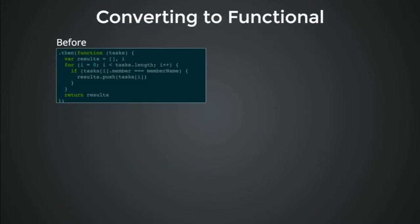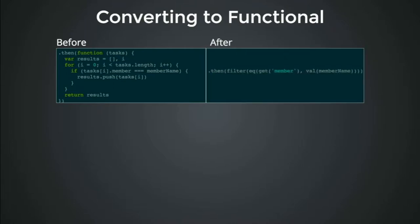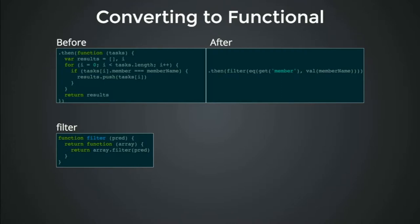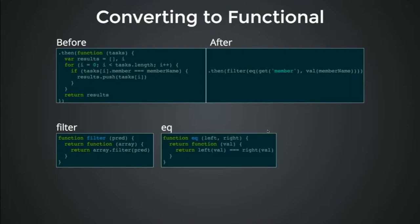The next chunk: we want to filter by member name — make sure it equals the value passed into our function. Before versus after: we go filter where equals, equaling two things — getting the member equal to the actual value of member name. A lot less code and hopefully a bit clearer. filter-where uses array's built-in filter. 'equals' is a higher-order function that takes left and right expressions and evaluates those values. 'value' is just a hard-coded thing — here's the value, give it back to me so we can use it in a nice higher-order way.